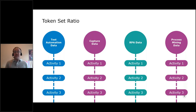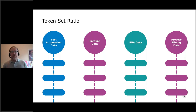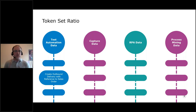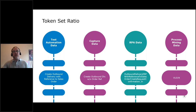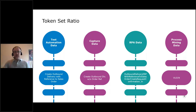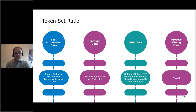For example, 'Create outbound delivery with reference to a sales order' is a clear activity label. Looking across at other activity names — 'Create outbound DLV with order ref,' a long run-on title, or even the process code 'VL01N' — they're all the same activity. Our brain is doing a lot of work behind the scenes to figure that out. We can't sit there all day manually matching activities, so we need to teach a machine to do what our brains are doing. That's where the token set ratio algorithm comes in.